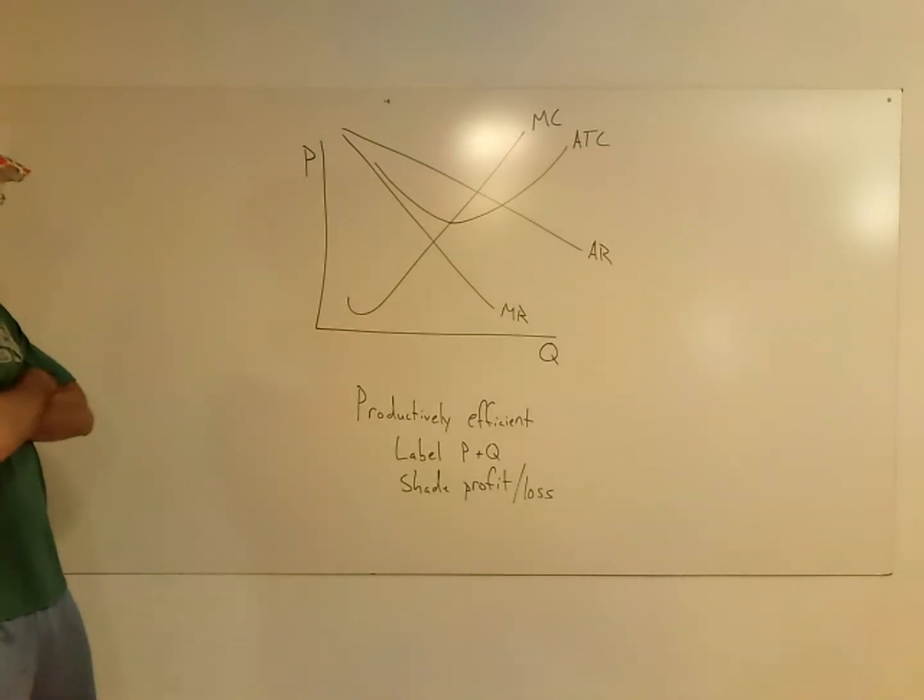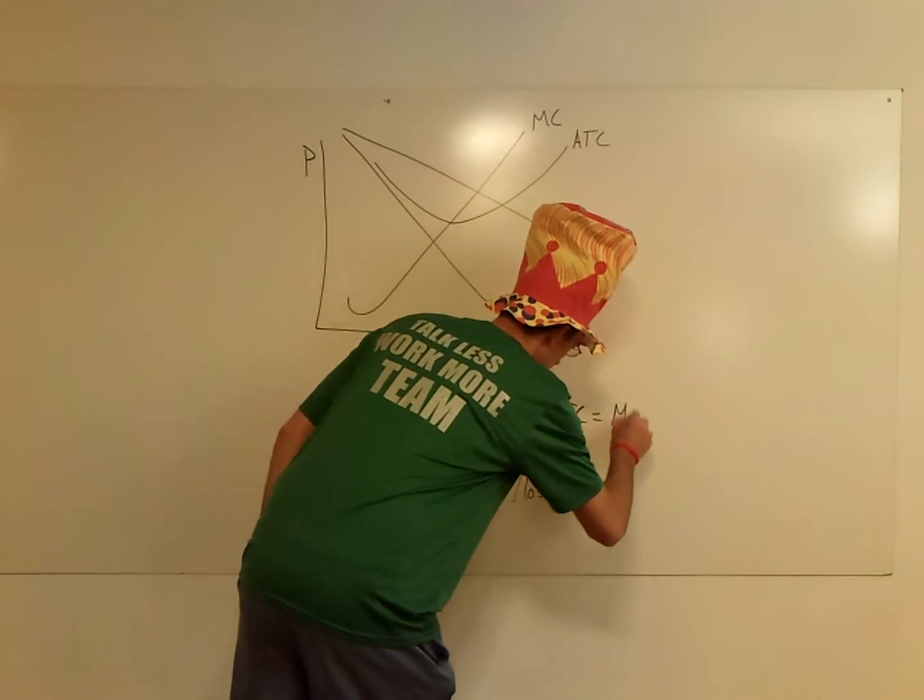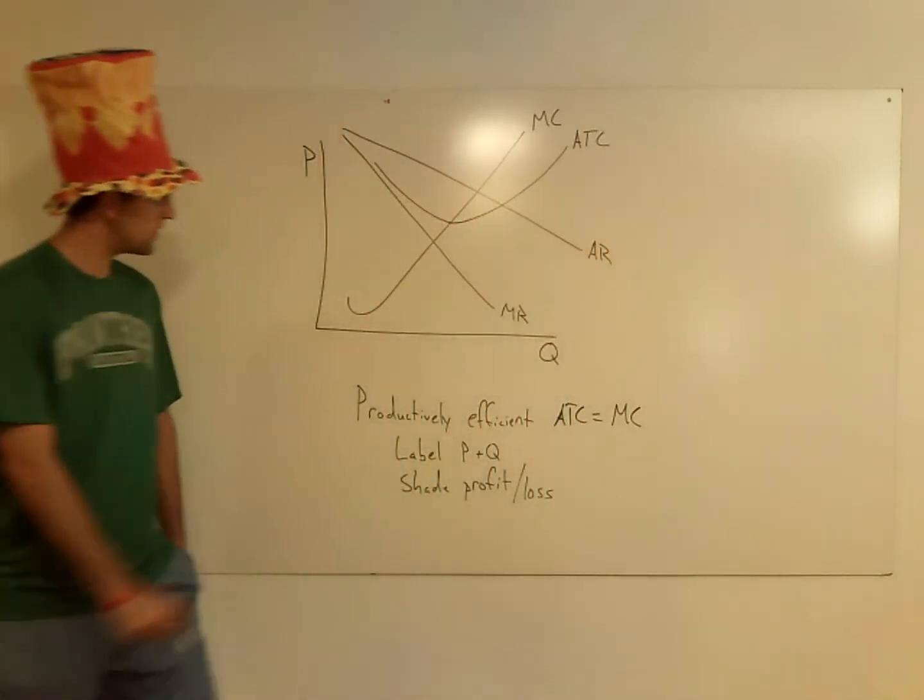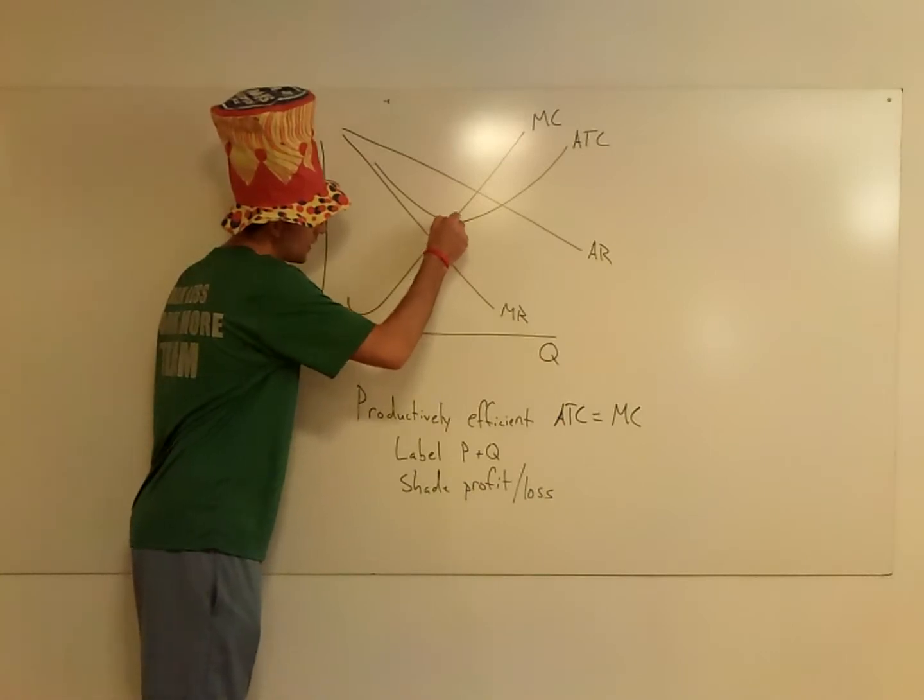Very good. So productively efficient - this is where ATC equals MC, also known as the efficient scale here. And that spot is right here.